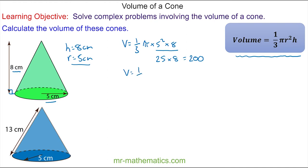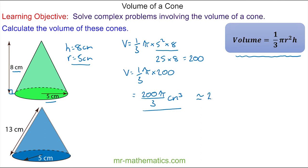The volume is one third of pi multiplied by 200. We can write this as a fraction: 200π divided by 3 cm³. We can approximate this as a decimal, which is approximately 209 cm³ to 3 significant figures.